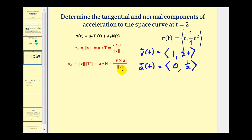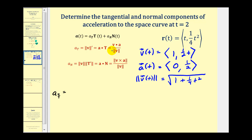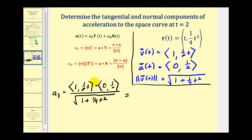Both formulas also require the magnitude of the velocity vector valued function. That is the square root of one squared plus one half t squared, which gives us the square root of one plus one fourth t squared. For the tangential component, we dot v and a and divide by the magnitude of v: one times zero is zero, and one half t times one half is one fourth t.